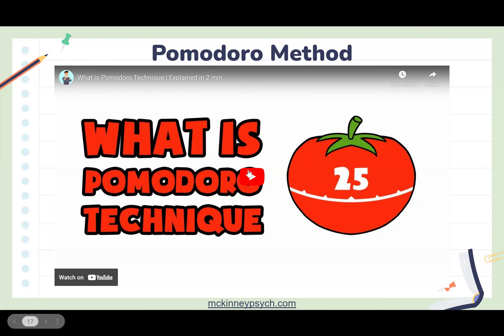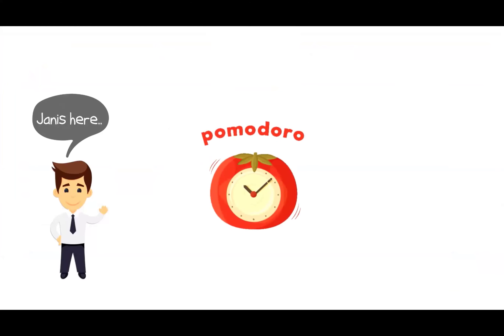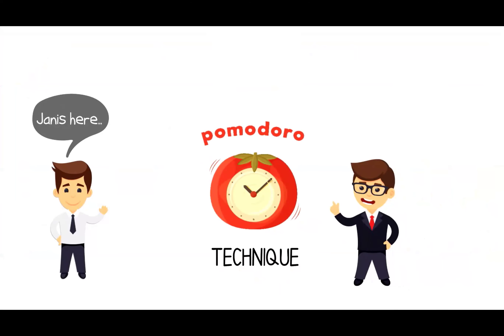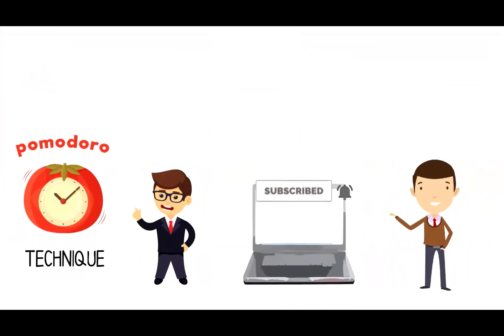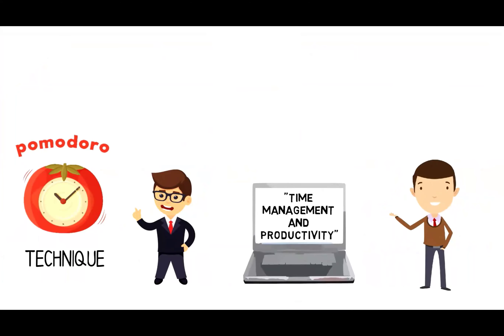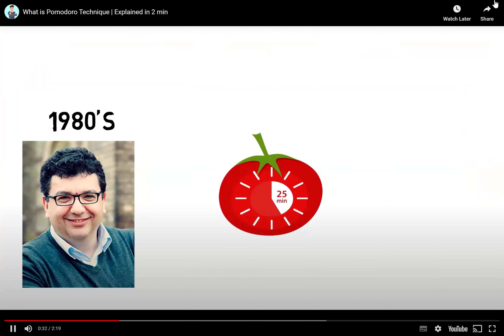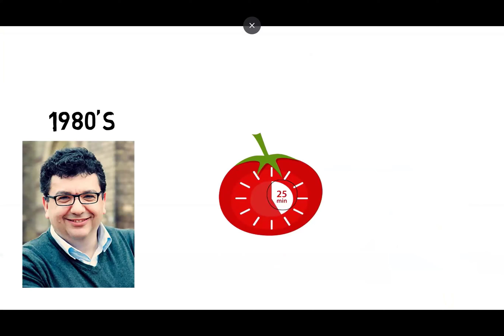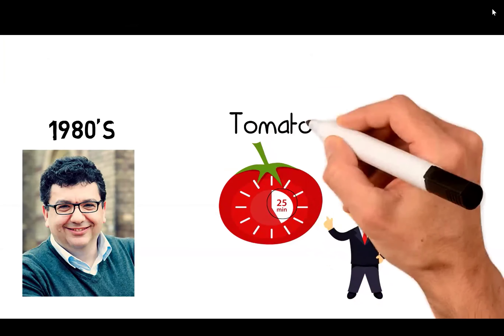Hi everyone, it's Janice here, and in this video we'll explore what the Pomodoro technique is. If you want to improve your focus, this technique might be exactly what you need to try. The Pomodoro technique is a time management method developed by Francesco Cirillo in the late 1980s. The technique uses a timer to break down work into intervals, traditionally 25 minutes in length, separated by a short break. Each interval is known as a 'pomodoro,' from the Italian word for tomato.